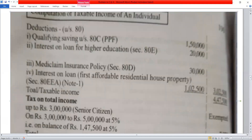Qualifying savings under 80C: PPF Rs. 1,50,000. Second: interest on loan for higher education under Section 80E: Rs. 20,000. Medical insurance policy under Section 80D: Rs. 30,000.